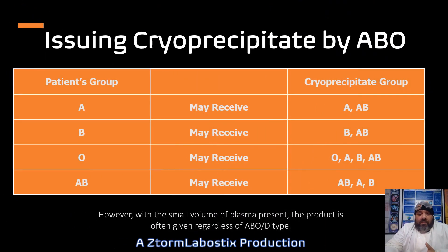In this table, I've highlighted the indications for issuing cryoprecipitate by ABO blood group. Suffice to say, with a small volume of plasma present, the cryoprecipitate is often given regardless of the ABO group or type.